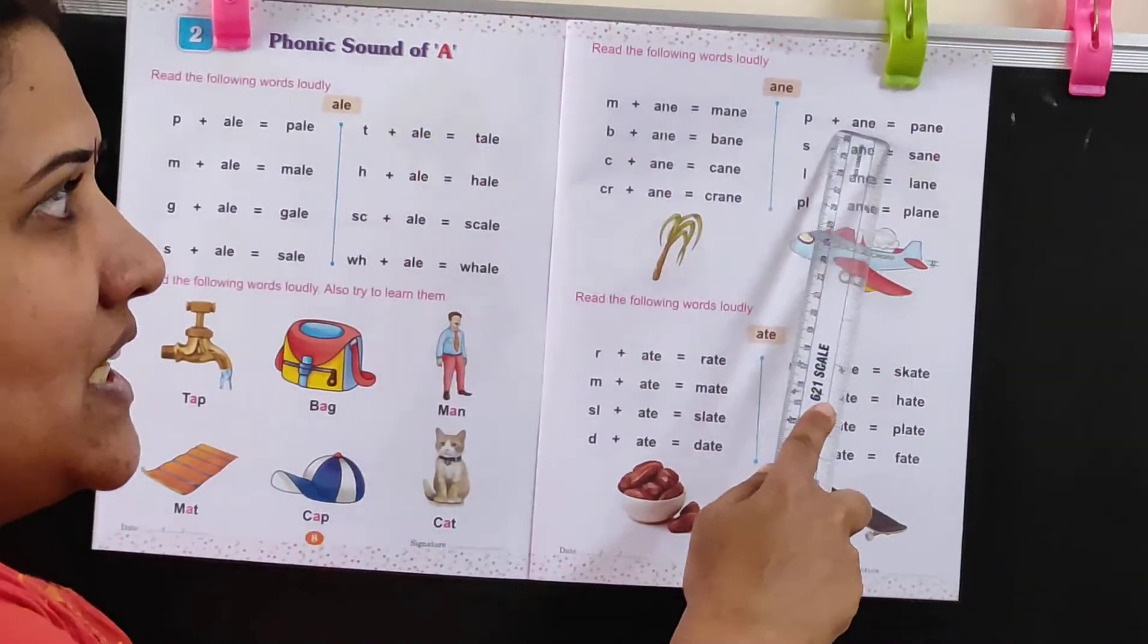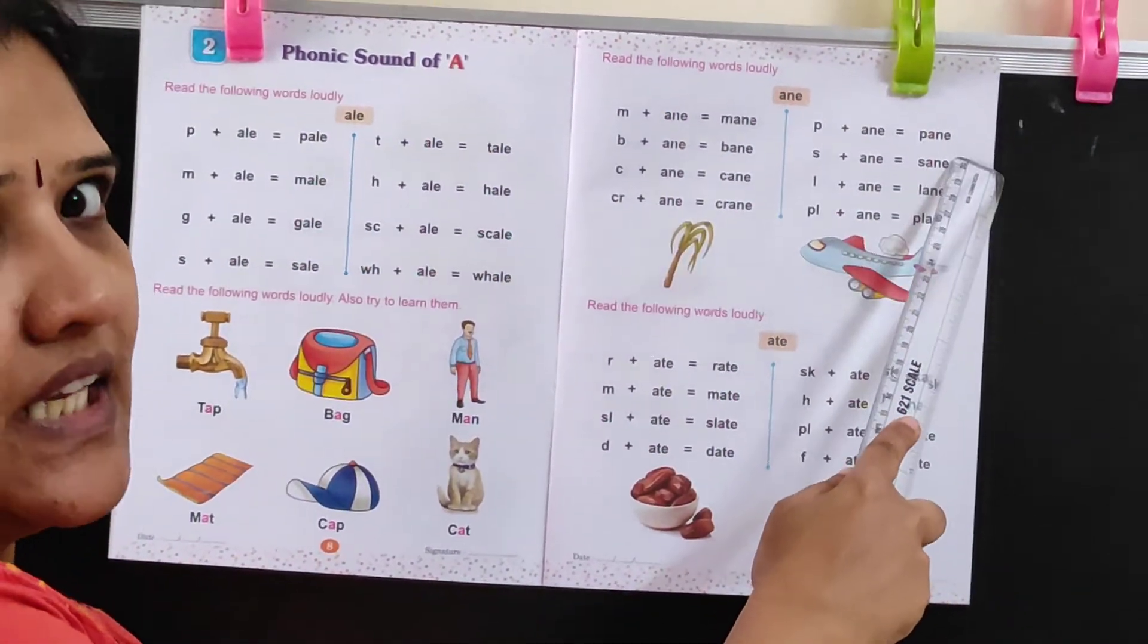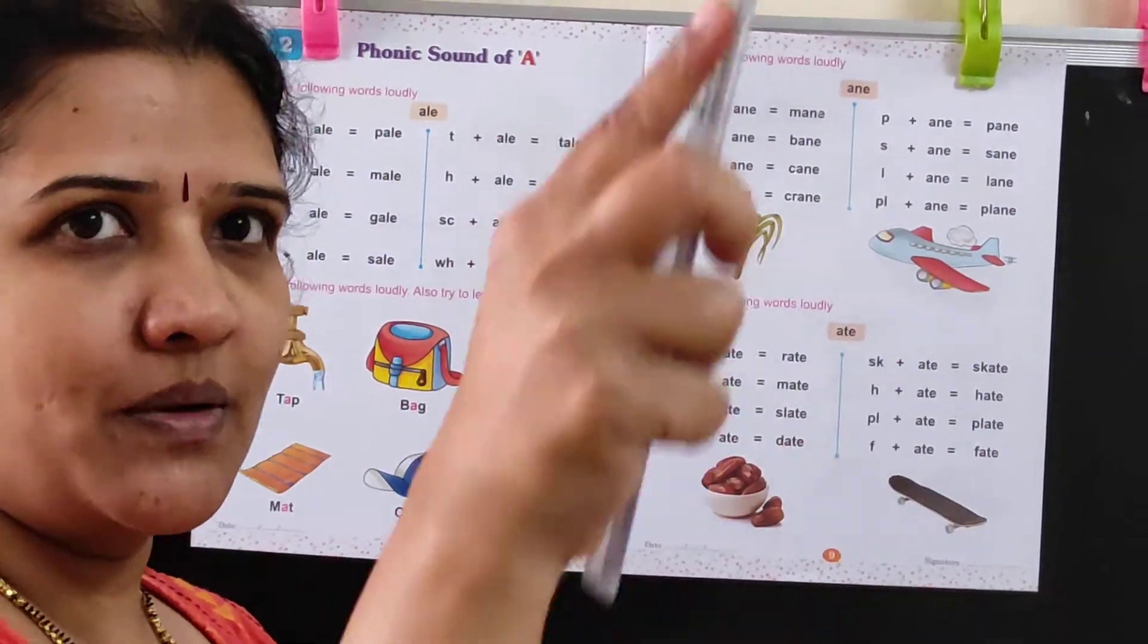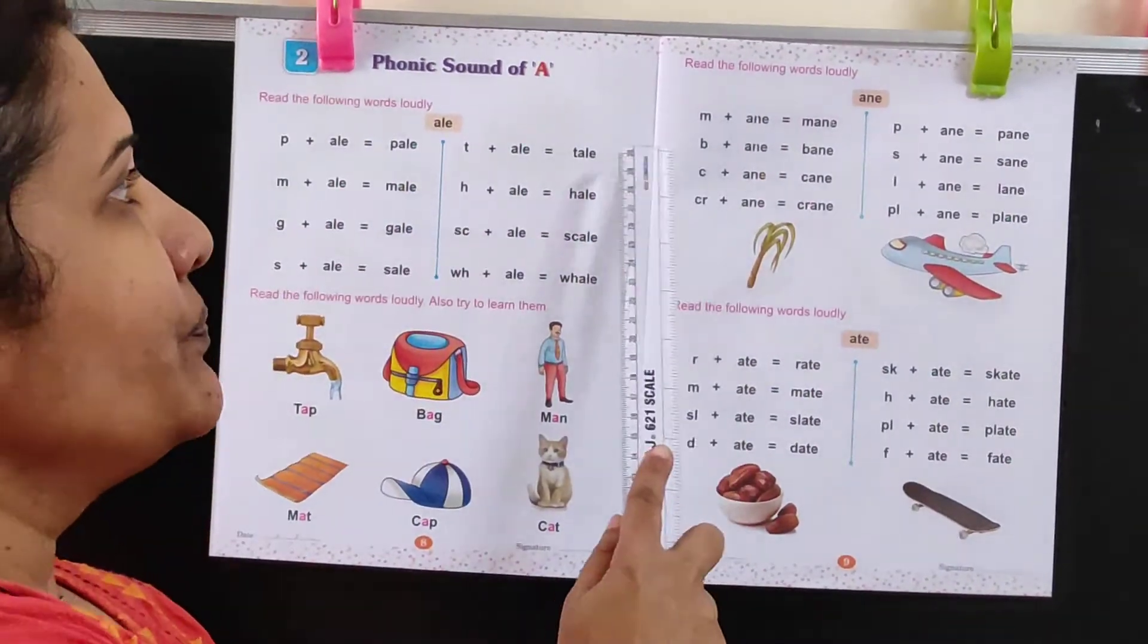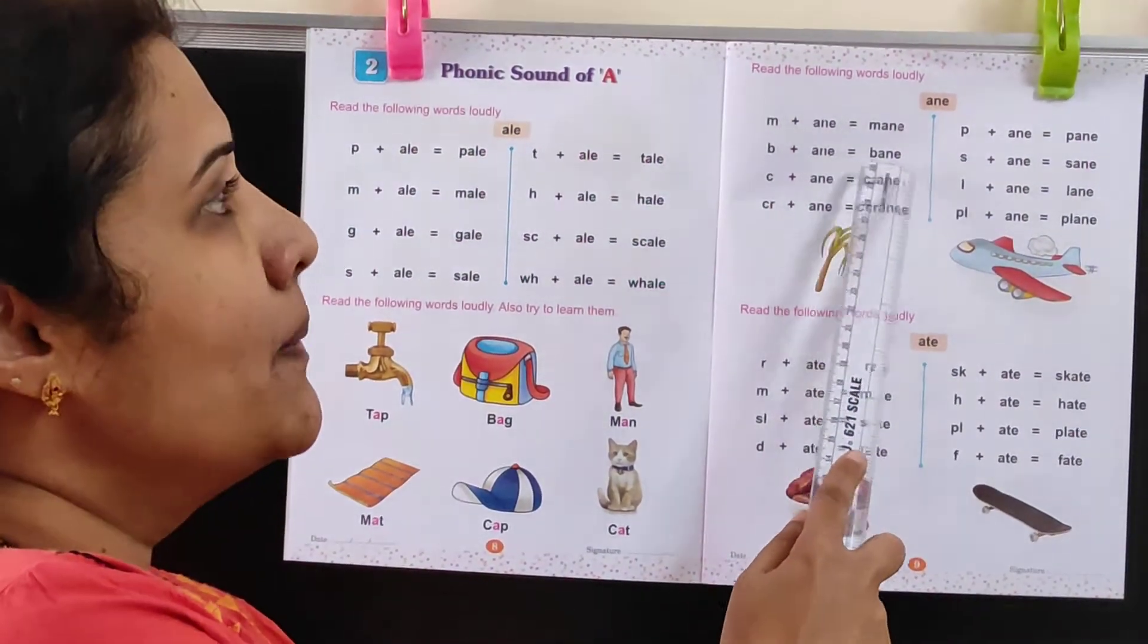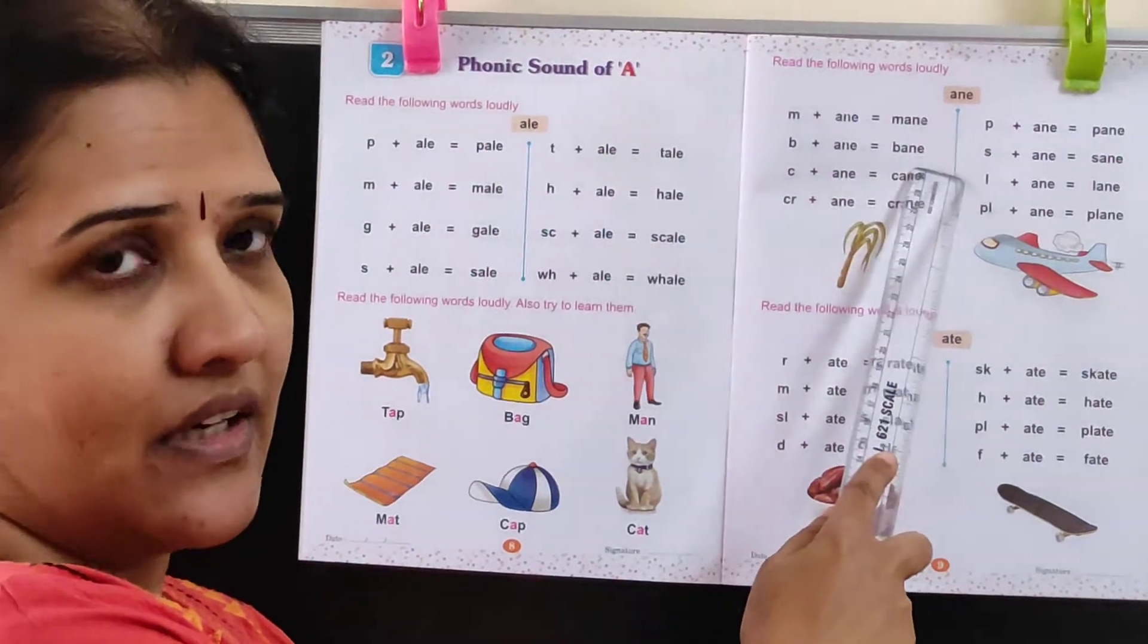P plus A is Pane, P-A-N-E, Pane. Windows have got Pane. You have the window frame, that is called a Pane. B plus A-N-E is Bane, B-A-N, Bane.